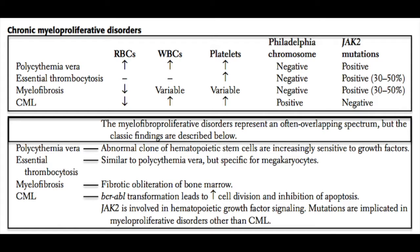Lastly, with CML you'll obviously have an increase in the white blood cell count — that's why we tend to call it a leukemia. You usually also see an increase in the platelet count, but typically a decrease in the red blood cell count, so patients get anemia. CML is a tricky one to remember: decreased red blood cells, increased white blood cells, increased platelets. CML is Philadelphia chromosome positive, but JAK2 mutation negative.